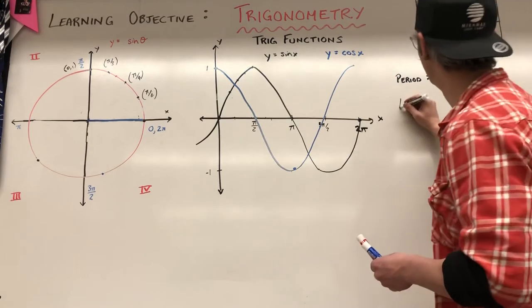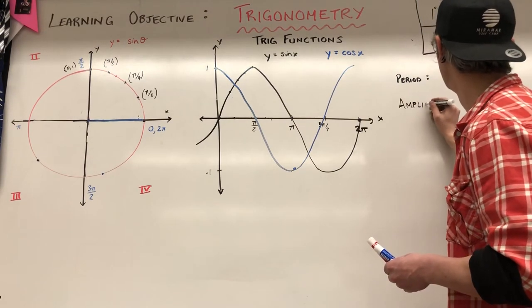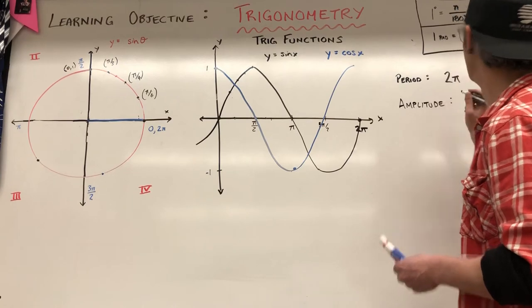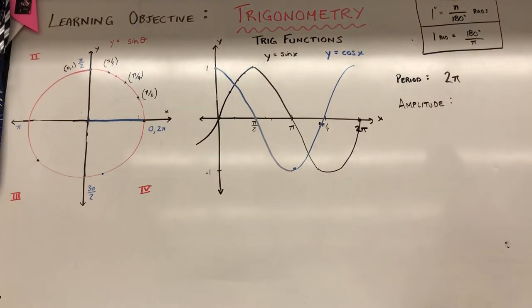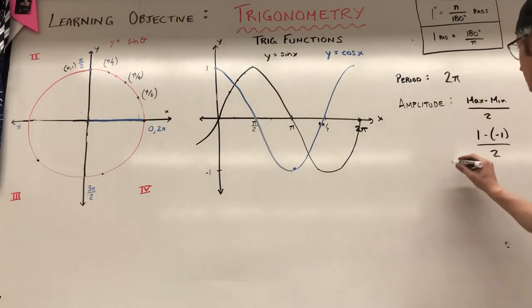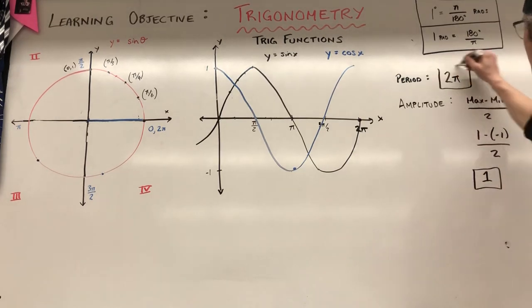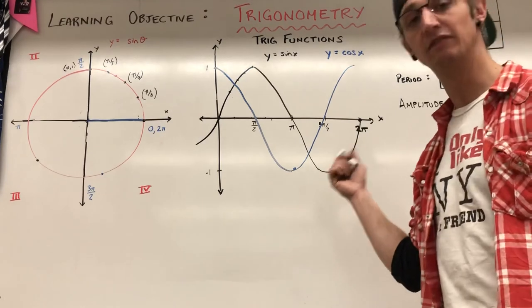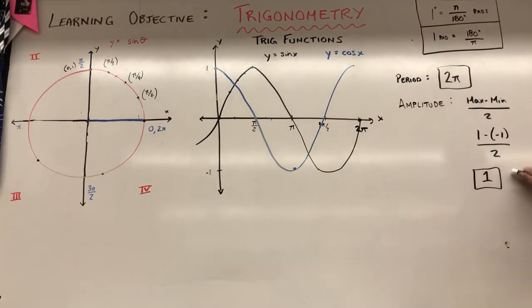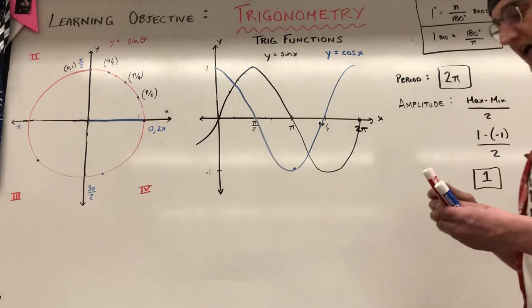And then our amplitude. Our amplitude is basically our max minus our min divided by 2. Max minus min over 2. So for our baseline function, it's 1 minus negative 1 over 2 for an amplitude of 1. So our baseline period for our sine and cos baseline functions is 2 pi. And our starting amplitude is 1. Everything is going to be based on a transformation of those two things.